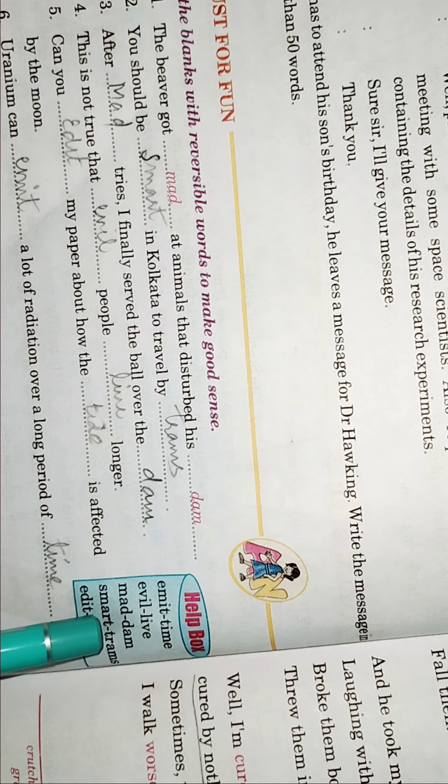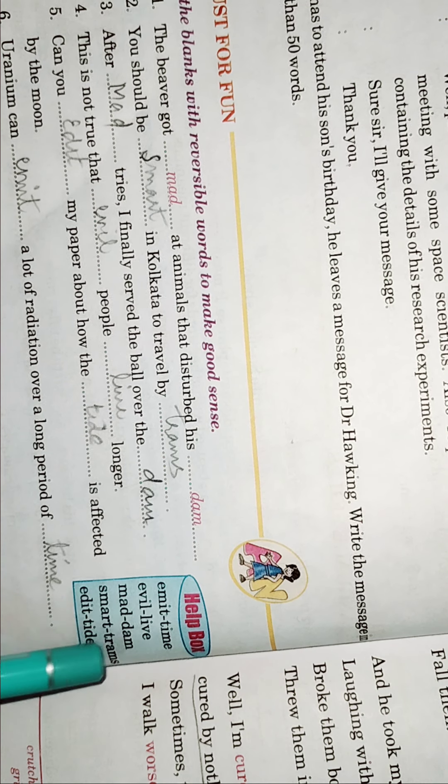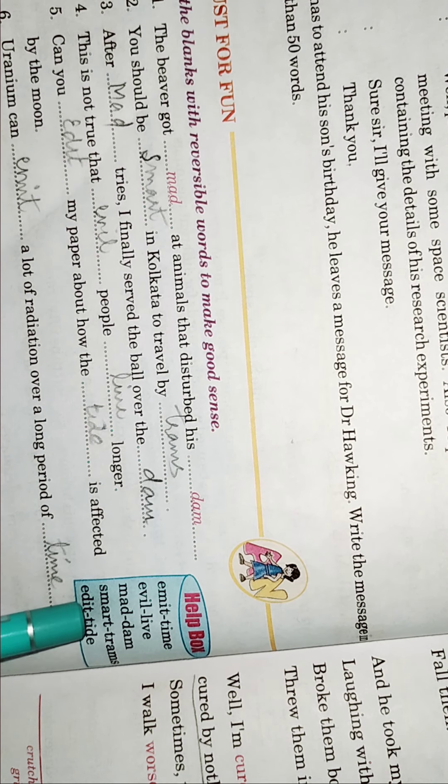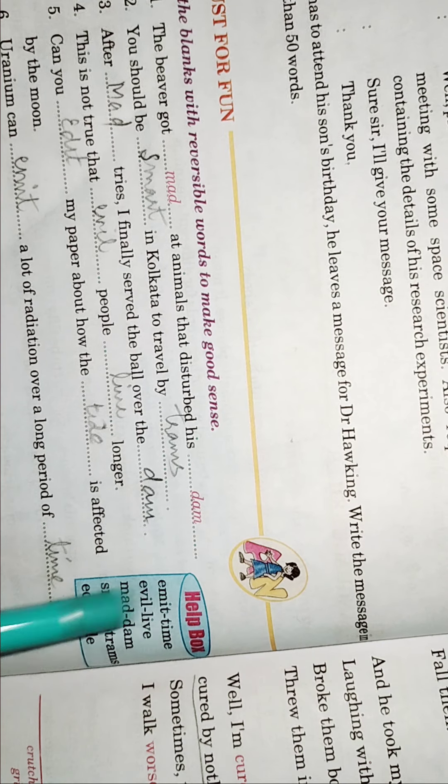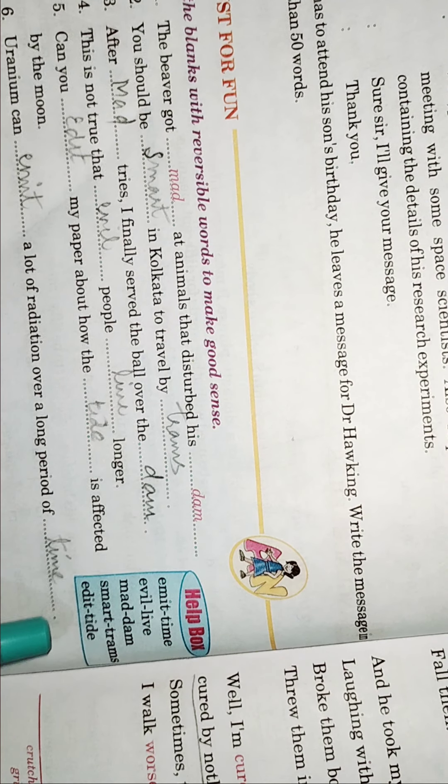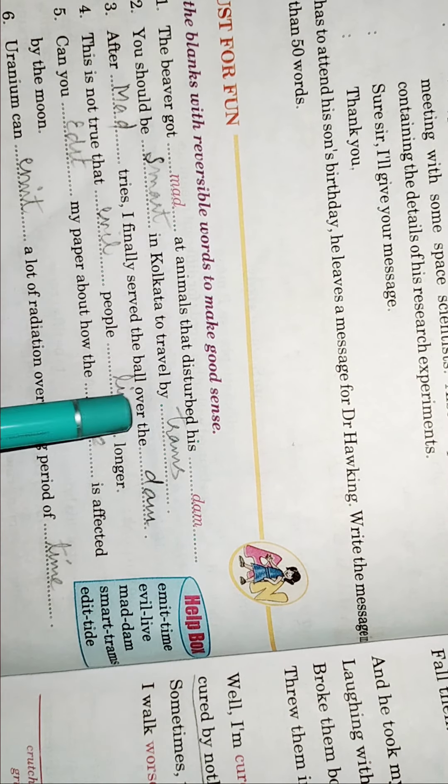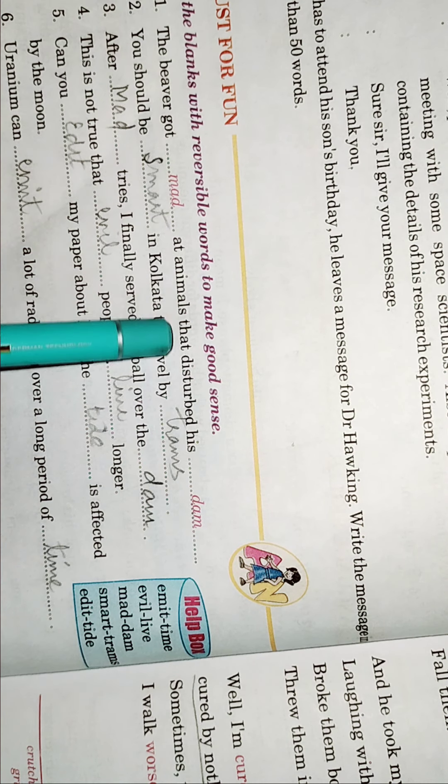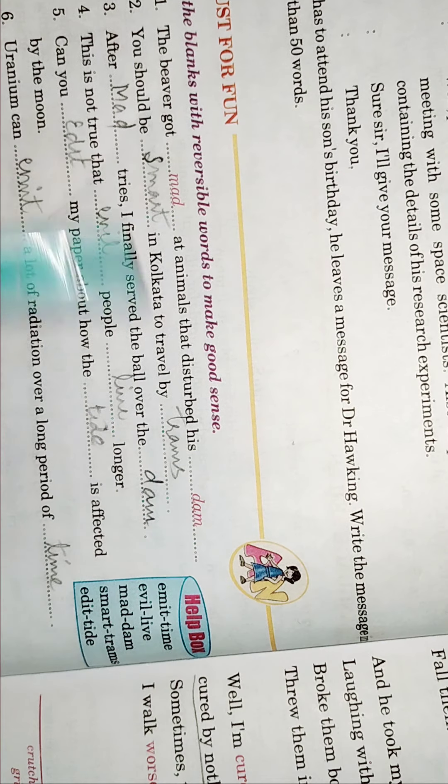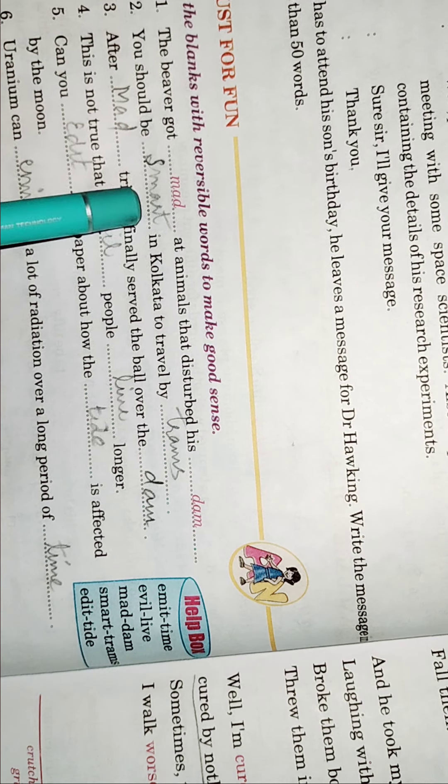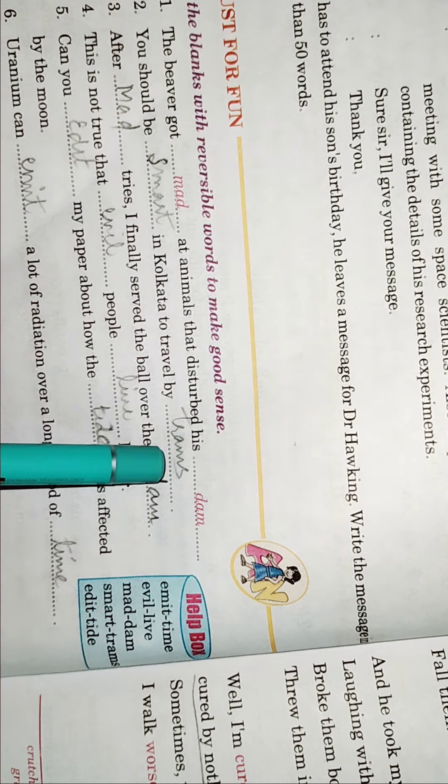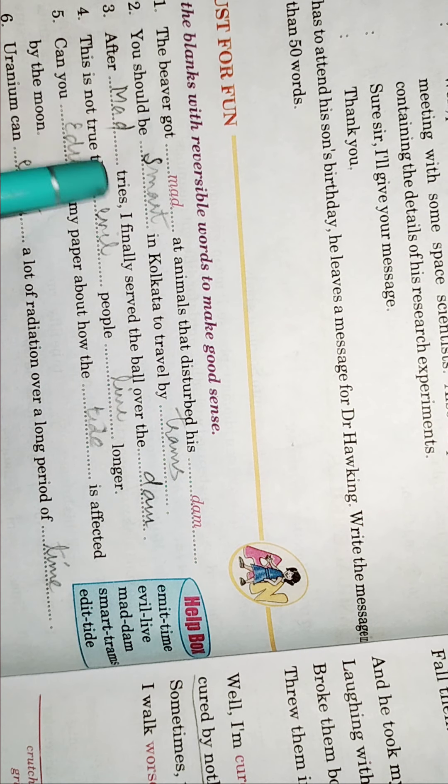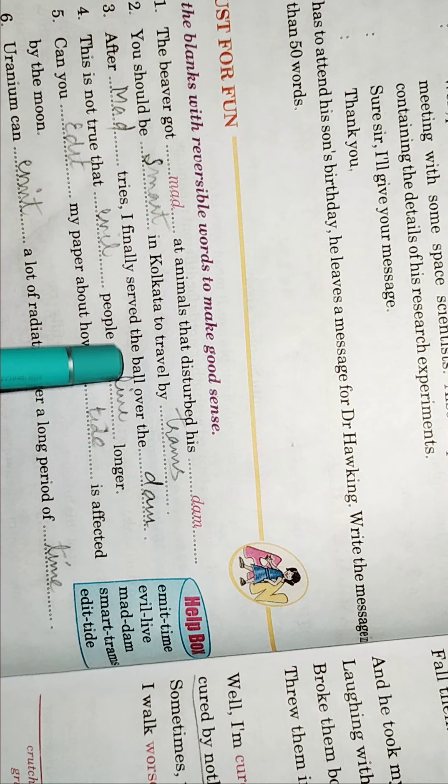So like just see here these are reversible emit emit t-i-m-e time so these are called as reversible words evil evil live live mad mad cut reverse over your damn smart t-r-a-m-s trams edit and tied so all these are the reversible words and we have to use in these sentences.